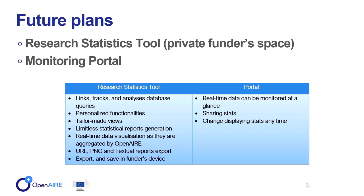In the near future we are going to release the research statistics tool, which will be used only by Open Air founders using their credentials, ensuring their security and privacy. Its main feature is to enable founders to produce by themselves limitless statistical reports in real time and save them to their personal device. Founders, making a selection of the produced statistics, can publicly publish them in the Founders Monitoring Portal to provide transparency and increase their impact.